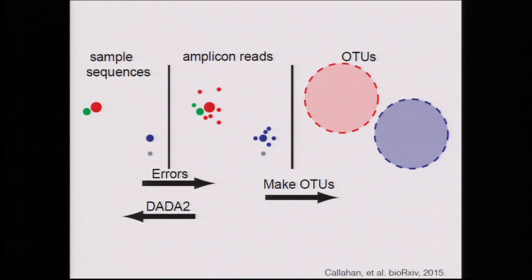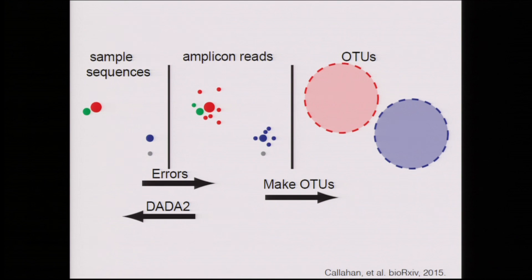I'm going to talk about a method called DADA2. We're going to take this seriously as a problem in unsupervised learning, and we're not going to try to construct OTUs. We're going to try to infer exactly the sample sequences and their associated abundances that produced the sequencing reads in our sample.